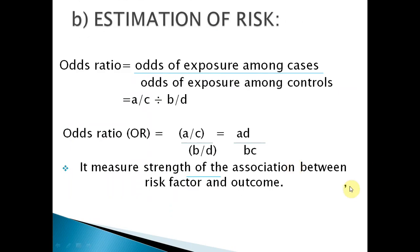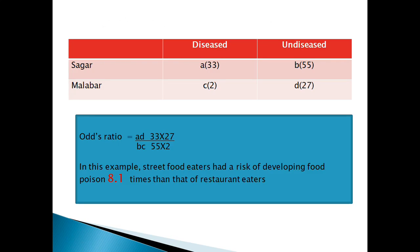The odds ratio gives the odds of exposure among cases and controls and represents the strength of association between the risk factor and outcome. The risk factor is eating street food and the outcome is food poisoning. Calculating it: 33 × 27 divided by 55 × 2 gives 8.1. So the odds ratio is 8.1, which is the measure of strength of association between eating street food (exposure) and food poisoning (outcome).